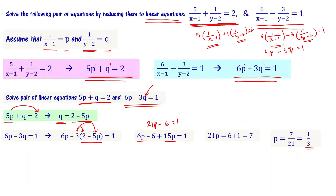Now we want to find the q value. q equal to 2 minus 5p, so q equal to 2 minus 5 times (1 by 3), which is 2 minus 5 by 3.